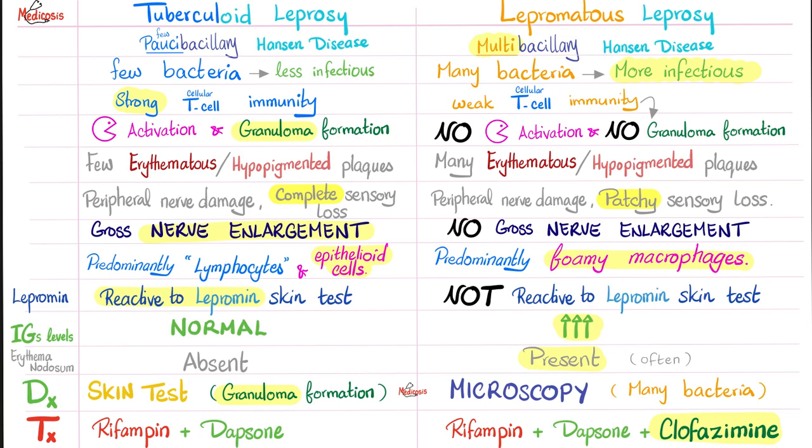Tuberculoid leprosy: few bacteria, therefore paucibacillary. Lepromatous is multibacillary. If tuberculoid has few bacteria, therefore it's less infectious — the infectivity is low. But with lepromatous leprosy, you are more likely to transmit it to someone else; the infectivity is high because there are numerous bacteria. Tuberculoid leprosy: few bacteria but strong immunity. Lepromatous: many bacteria but weak immunity.